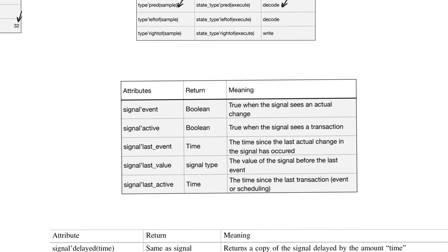Now let's look at attributes that act on signals. These return either a Boolean or a time value describing something that has happened to the signal. The most important is the event attribute: A apostrophe event returns true when an event — an actual transition — has occurred on the signal. The active attribute returns true when a transaction has happened. A transaction is either a real change or a scheduled future change. We'll understand the difference between events and transactions when we look at the process statement.